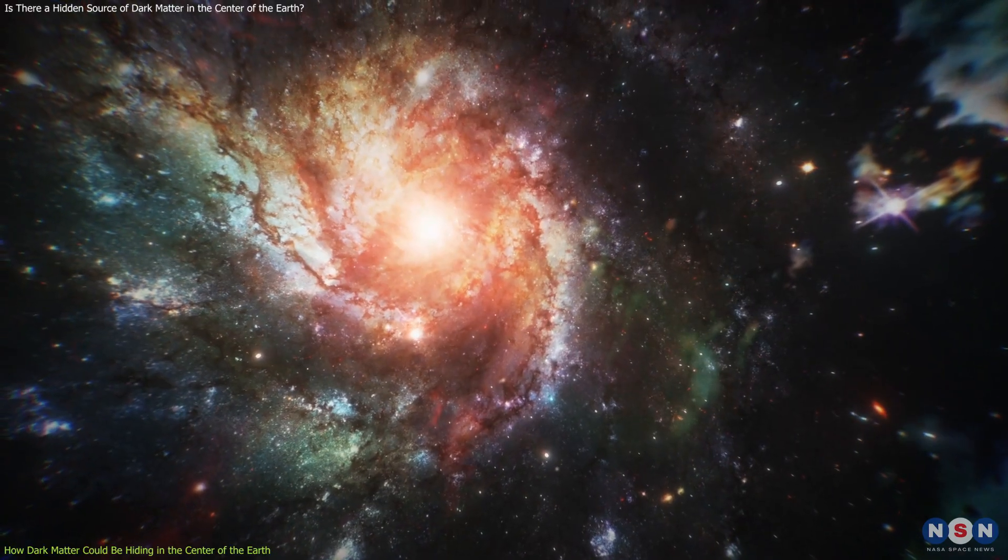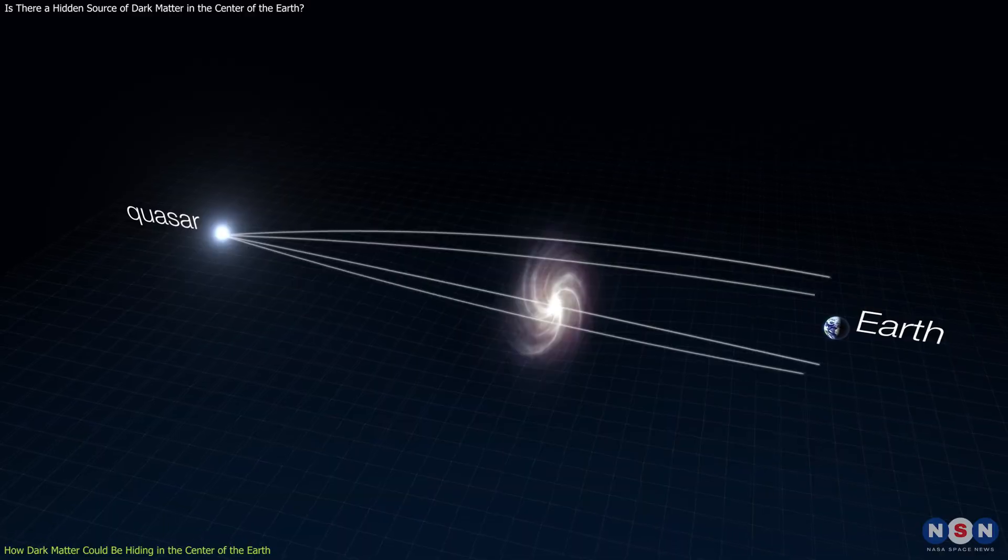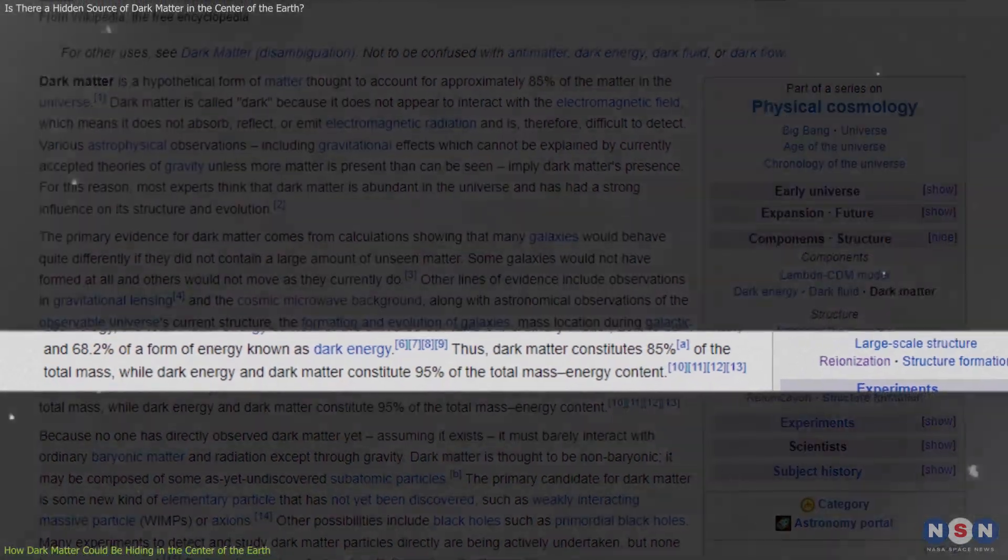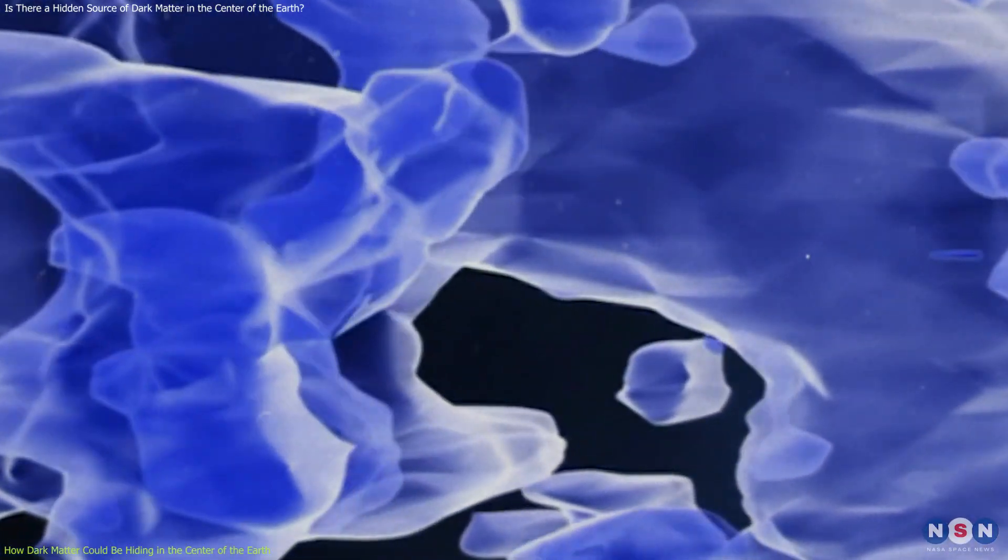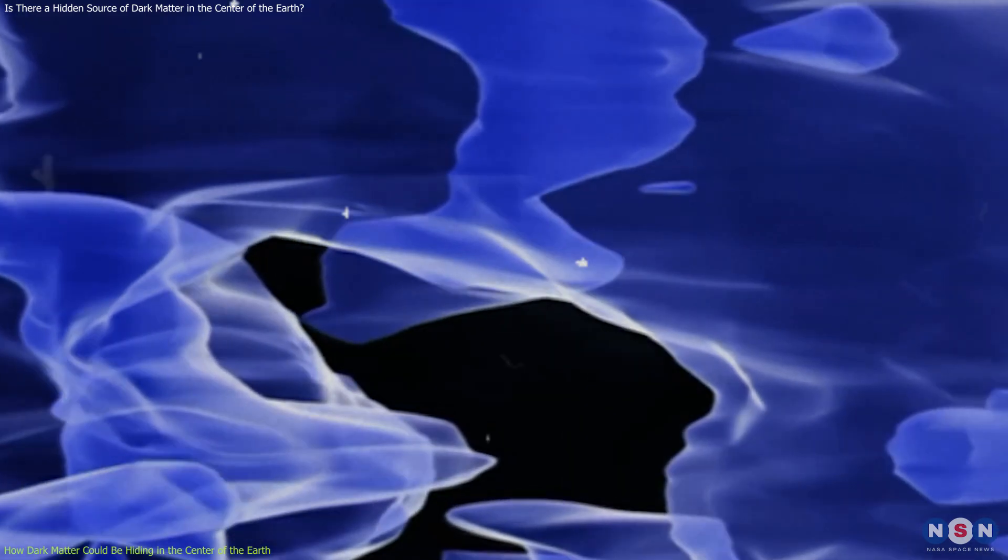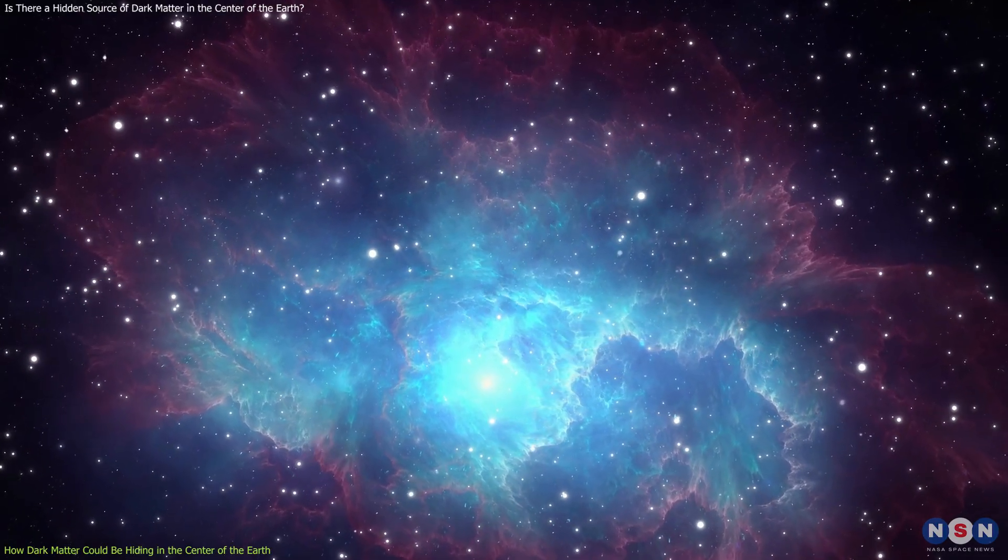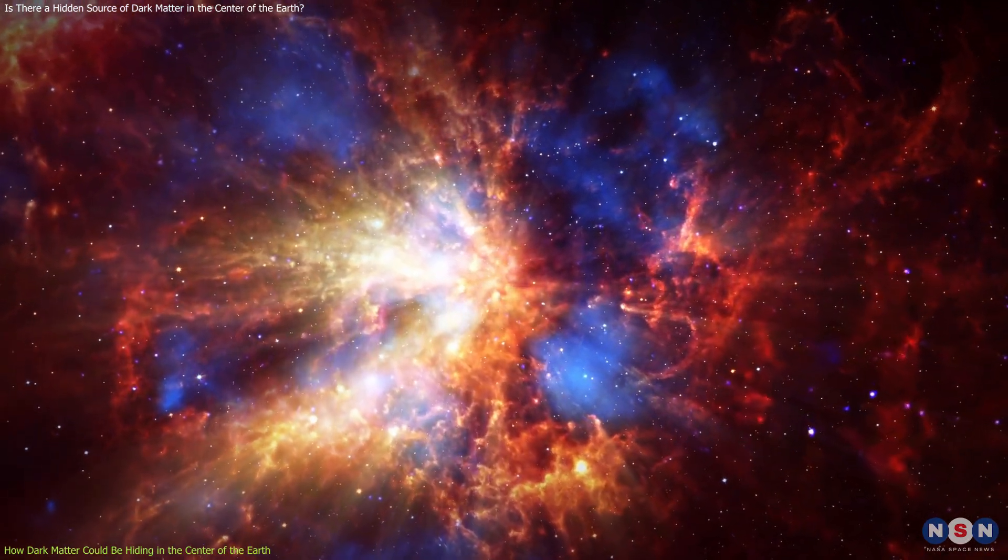For example, dark matter helps to hold together galaxies and clusters of galaxies, and affects the way light bends around them. Dark matter makes up about 85% of all the matter in the universe, but we have no idea what it is made of or how it interacts with ordinary matter. This is one of the biggest mysteries in modern physics, and solving it could have profound implications for our understanding of the cosmos.